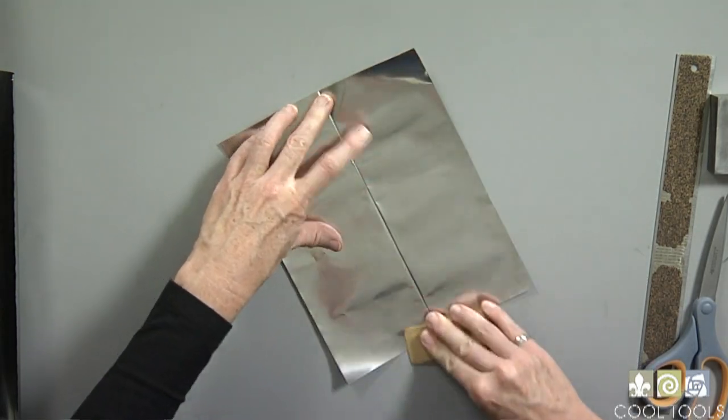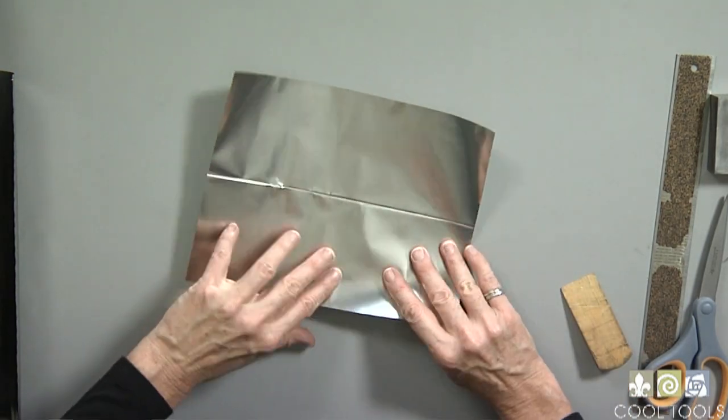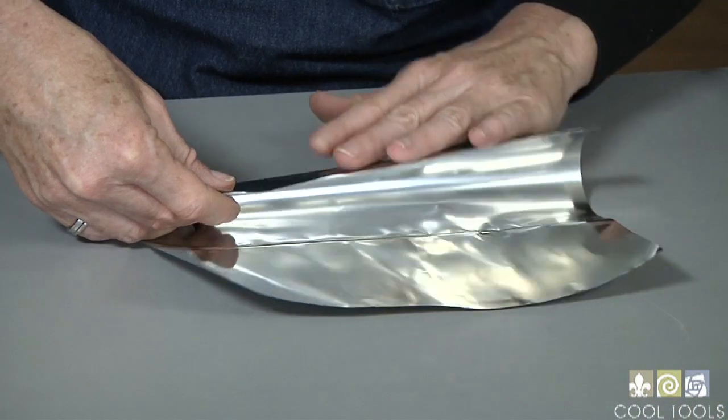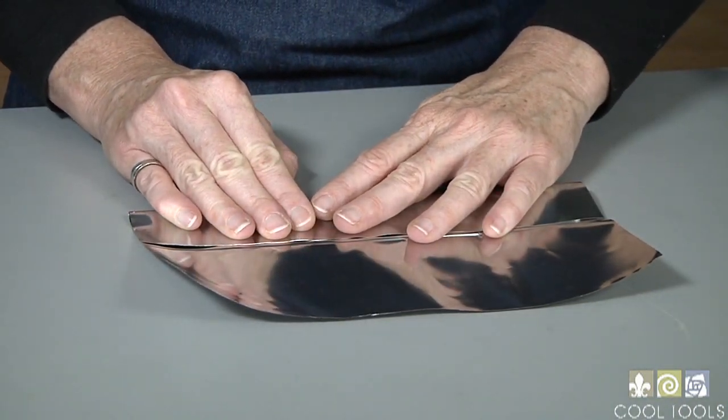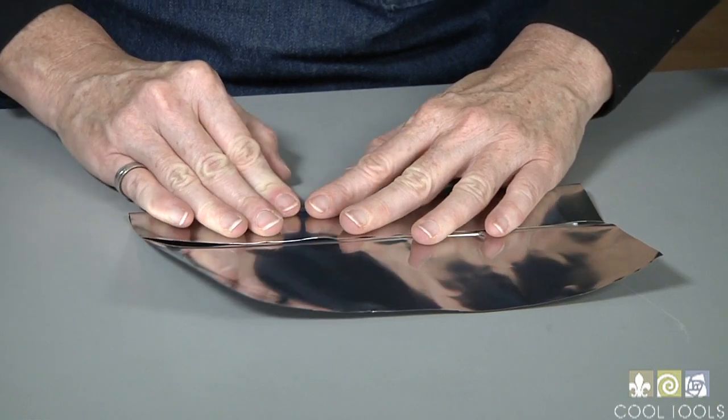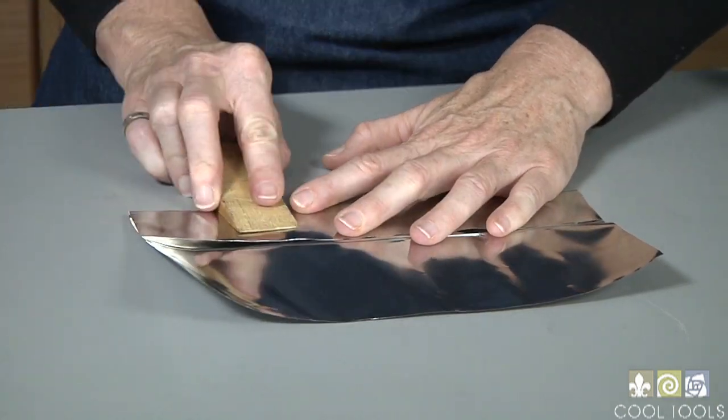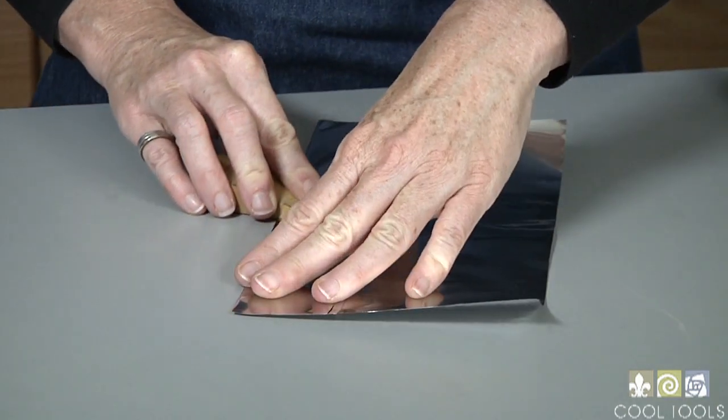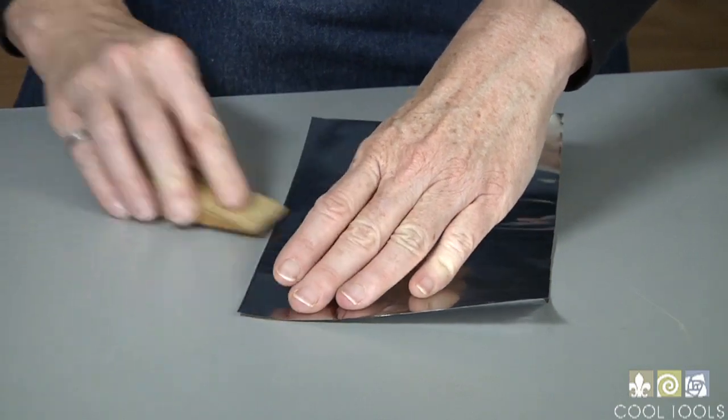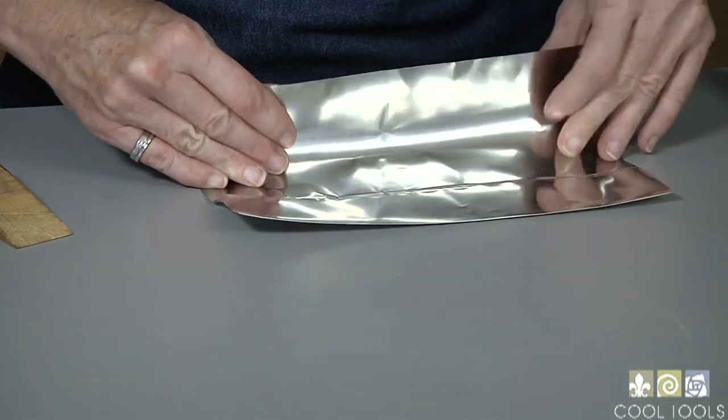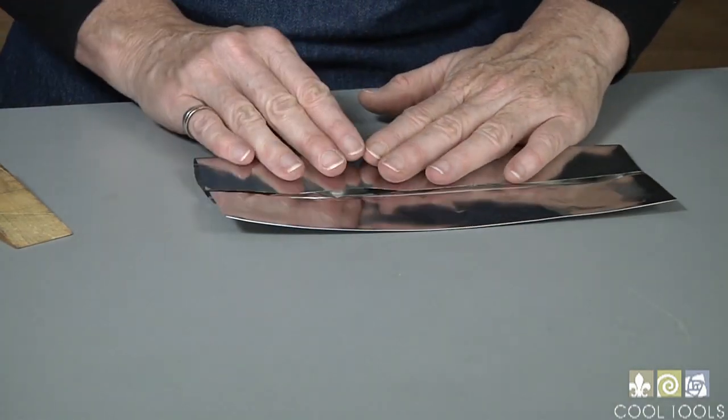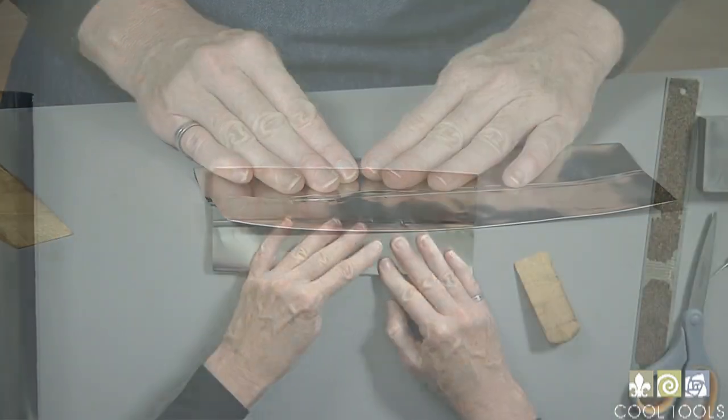Now I'll fold one of these up to the first crease line making sure that I have a nice smooth fold and it's not kinked. Then burnish that flat. Same thing on this side. Make sure that's nice and smooth so it can bend easily, and burnish that one.